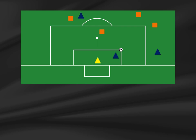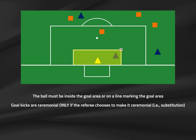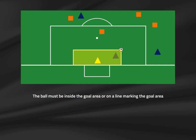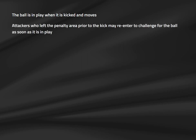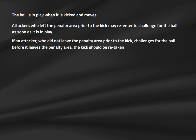Defenders can stand anywhere during a goal kick with no restrictions. Similar to a throw-in, there is no requirement for players to wait unless the referee holds up play for substitution, misconduct, or injury, in which case a whistle is required. In 2020, IFAB changed the laws so the ball no longer needs to leave the penalty area to be in play — a goal kick re-enters play when it is kicked and moves. Attackers may challenge for the ball once it is kicked and moves, but only if they have first left the penalty area.